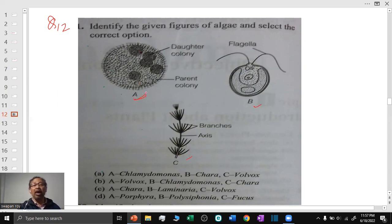B is the Chlamydomonas, the unicellular member of the Chlorophyceae. And C is the Chara. So, our answer is option B.